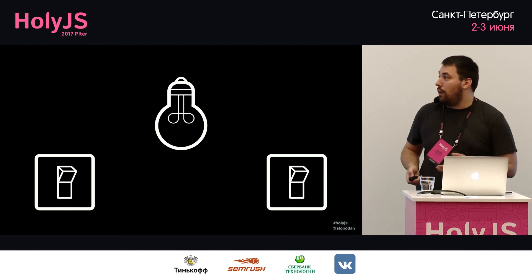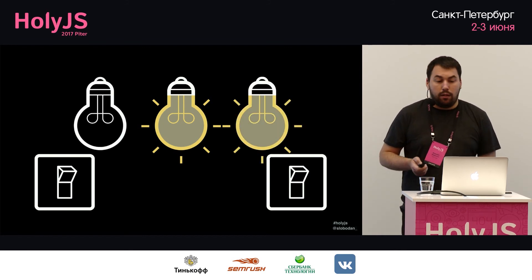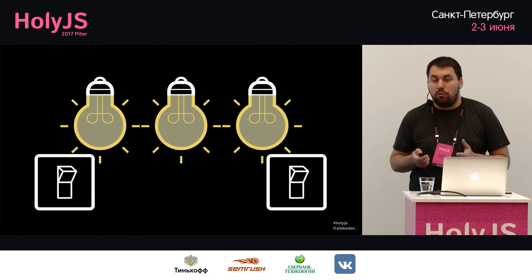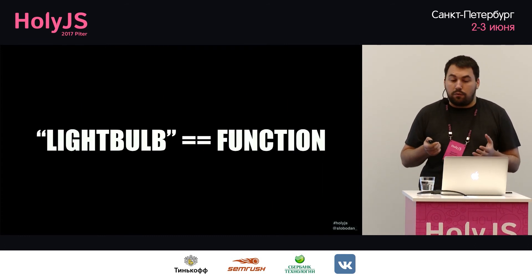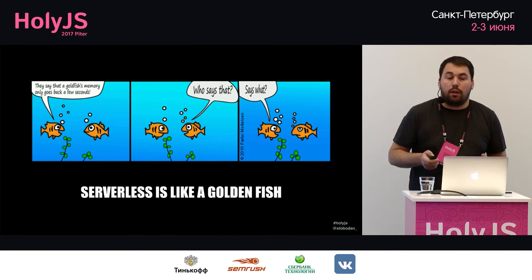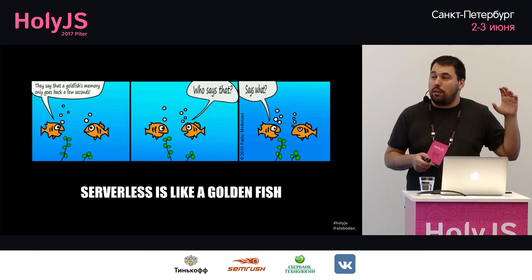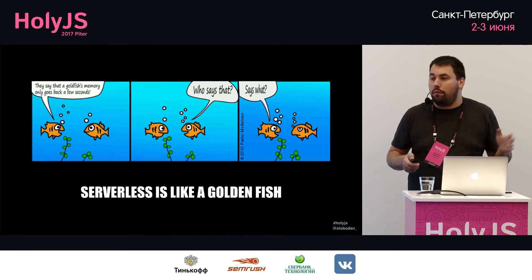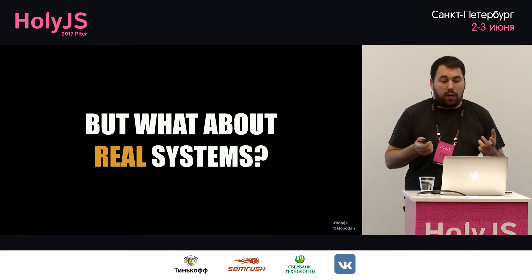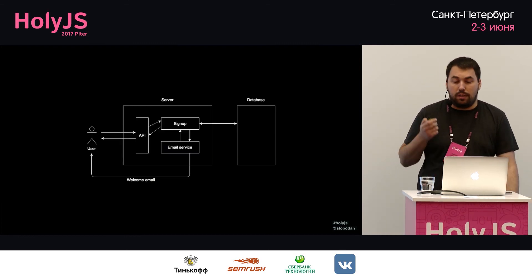Scaling works differently from a light bulb — if you need more light, it automatically gives you more. If the bulb breaks it's automatically replaced. It's also stateless — it doesn't know anything about your previous application state, just like a light bulb doesn't know whether it was on or off before. Now let's see how this works with a real system.